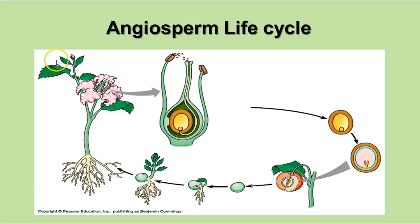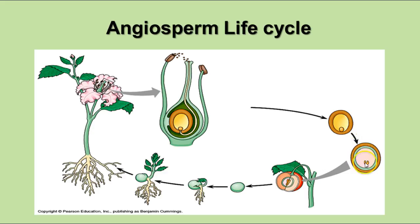In the angiosperm life cycle, pollination occurs when pollen lands on the stigma, which is sticky to hold the pollen in place. The pollen grains germinate and produce a pollen tube that grows down the style into the ovary to deliver the sperm nuclei to the ovule. The fertilized ovule is inside the ovary, which develops into a fruit. As the ovary matures into a fruit containing the seed, the seed then germinates and produces the new plant.